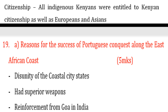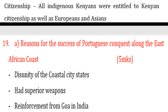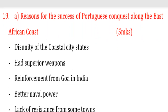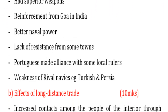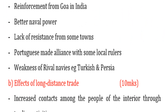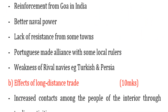Number two: the Portuguese had superior weapons. The people of the coastal towns did not have sophisticated weapons like the Portuguese and were therefore defeated. Number three: they received reinforcement from Goa in India. Number four: they had better naval power compared to the coastal town people.